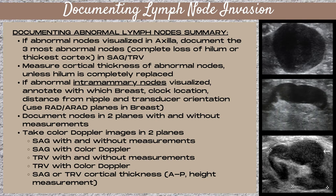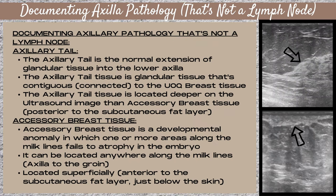What's most important is that you take a length (horizontal), a height (vertical), and a width (horizontal). Next, we're going to talk about how to document pathology in the axilla that's not a lymph node, but first a little anatomy review.